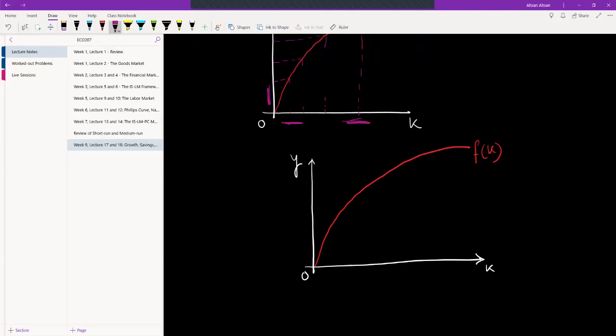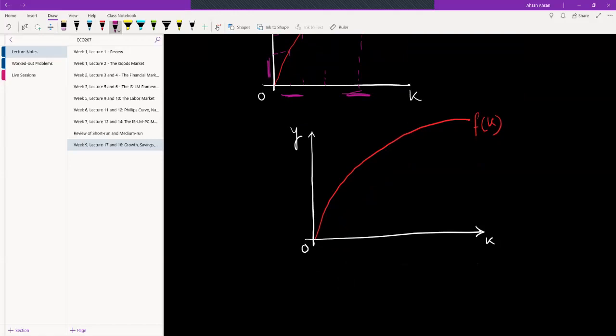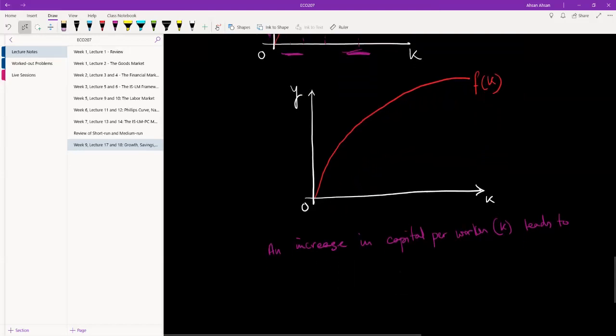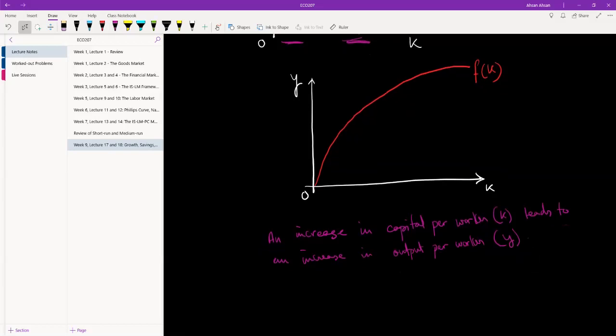Okay, so we have this relationship and what this relationship effectively tells us is that increase in capital per worker, which is small k, leads to increase in output per worker, small y. And that is what you want when we're talking about growth in an economy.